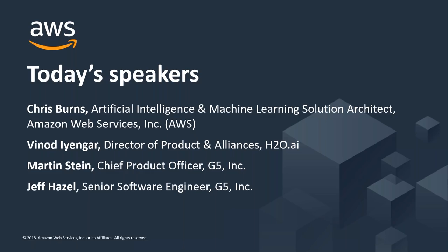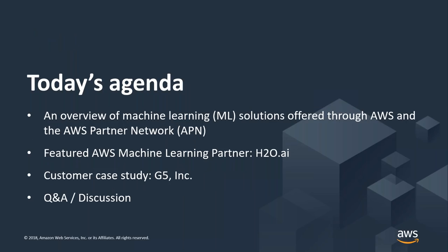Also today, speaking from G5, we have Martin Stein, the chief product officer, and Jeff Hazel, senior software engineer. For the agenda, we're going to try to pack quite a bit into one hour. I want to give you an overview of machine learning solutions offered by AWS and some of the partners in our APN network, some of the great work they're doing. The feature partner today is H2O.ai, and they're going to present their customer G5, a very interesting use case. Finally, we're going to save time for Q&A discussions, so make sure you get those questions ready.